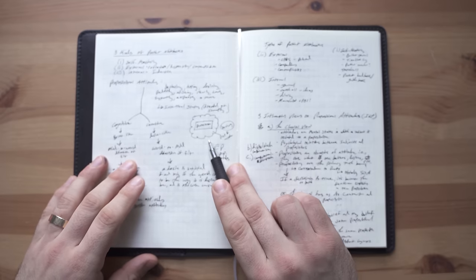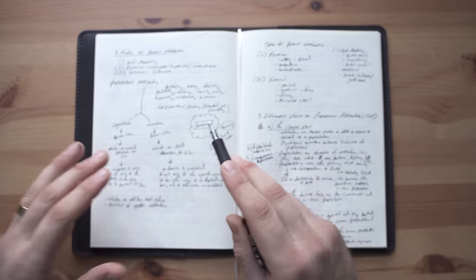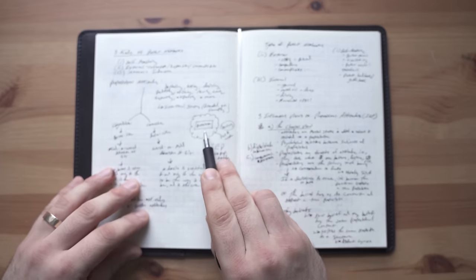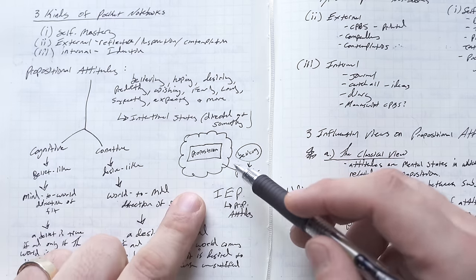So a propositional attitude is a mental state which has a proposition as its content or as its object. So here I drew a really bad picture of it, but there's a proposition. It's this little rectangle thing. I always think of propositions as being rectangles.